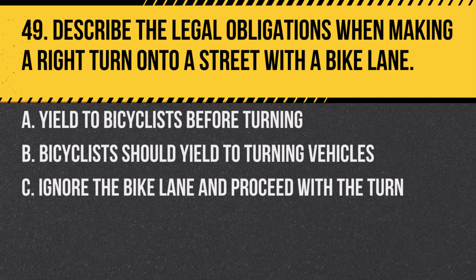Question 49. Describe the legal obligations when making a right turn onto a street with a bike lane. A. Yield to bicyclists before turning. B. Bicyclists should yield to turning vehicles. C. Ignore the bike lane and proceed with the turn. Answer: A. Yield to bicyclists before turning. Drivers must check for bicyclists in the bike lane before turning right.